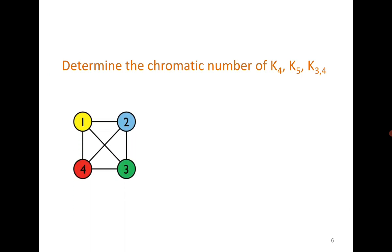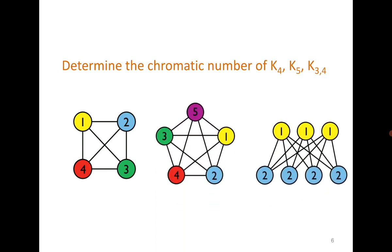For K4, the chromatic number is 4 because each vertex is adjacent to all other vertices and therefore all vertices require a different color. The same rule applies for K5. In the case of a bipartite graph, if you give one color to one partite set and another color to the other, every bipartite graph can be colored with two colors.